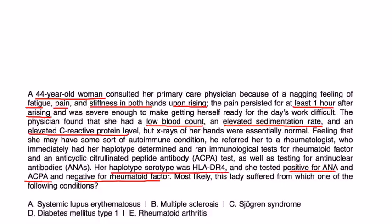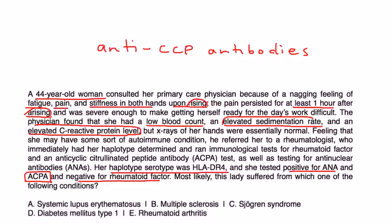Most likely this lady suffered from which of the following conditions. She's got the morning stiffness when she's getting out of bed, she's got the high ESR and the C-reactive protein, and she has this positive ACPA. Remember, it was the anti-cyclic citrullinated peptide antibody, also sometimes known as anti-CCP antibodies. The fact that her rheumatoid factor is negative is okay, because in 30% of patients, the rheumatoid factor can be negative. But without a doubt, there's enough clues in this question to point to E.